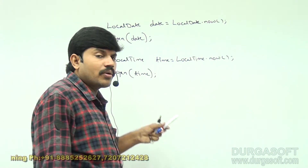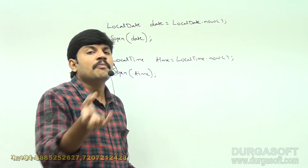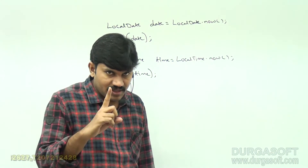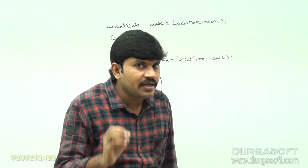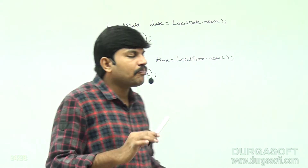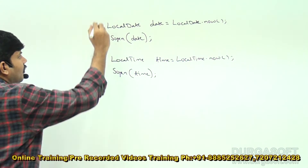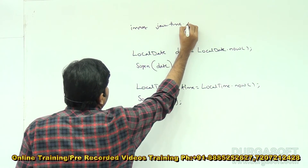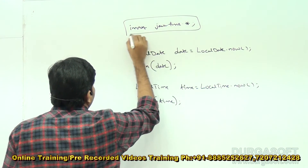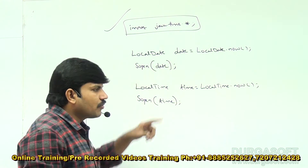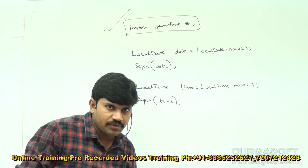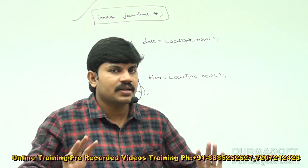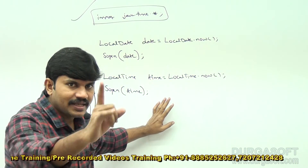These classes are present inside the java.time package. That's why, to run this code, at the top you must include the import statement: import java.time.*. This import is required before your class declaration, then only this code will be compiled and executed. This is how, using the Joda Time API, you print the current system date and current system time — very easy to use.